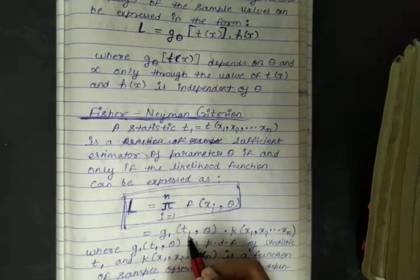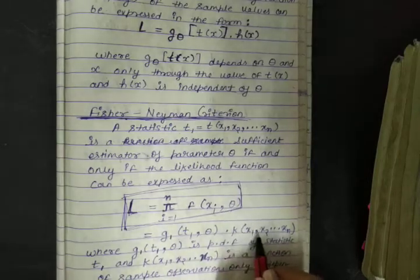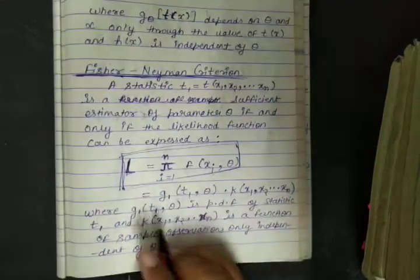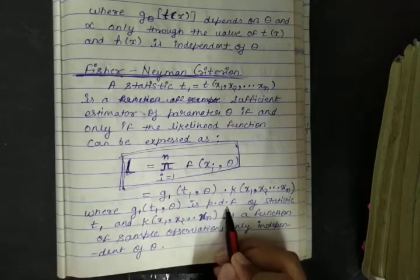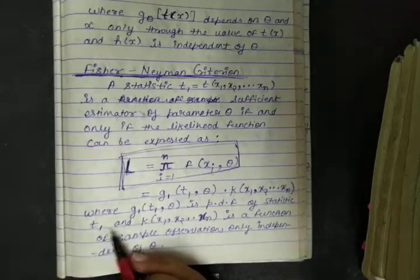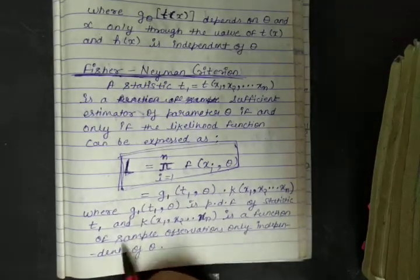g_1(t_1, θ) multiplied by k(x_1 to x_n), where g_1(t_1, θ) is a probability density function of statistics t_1 and k(x_1 to x_n) is a function of sample observations only, independent of θ.